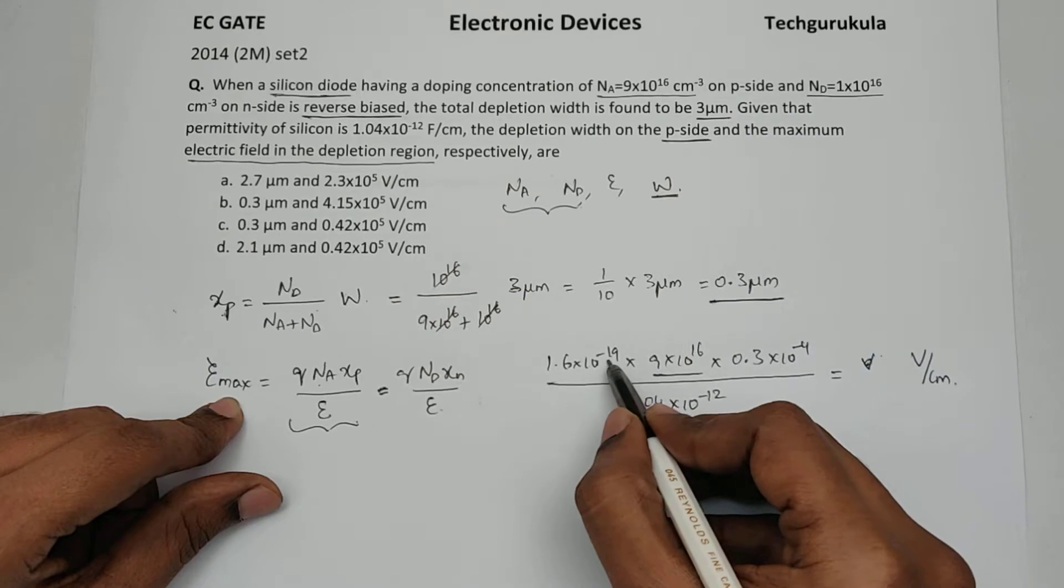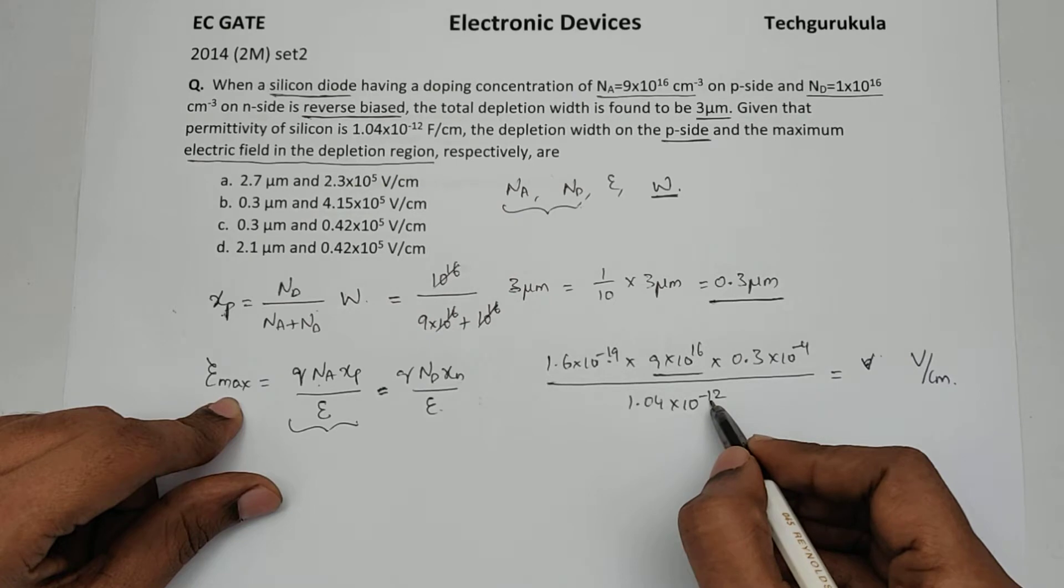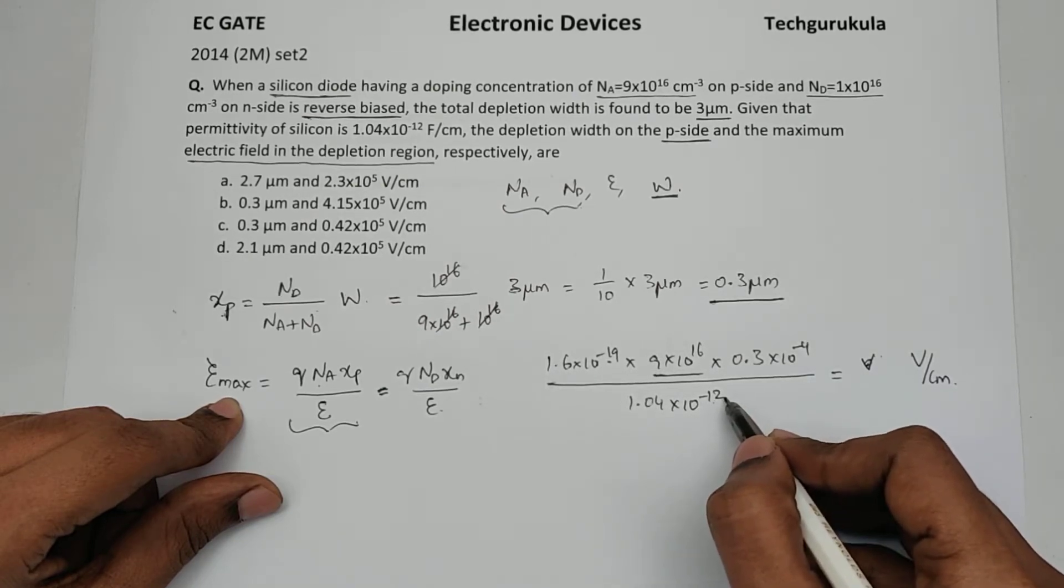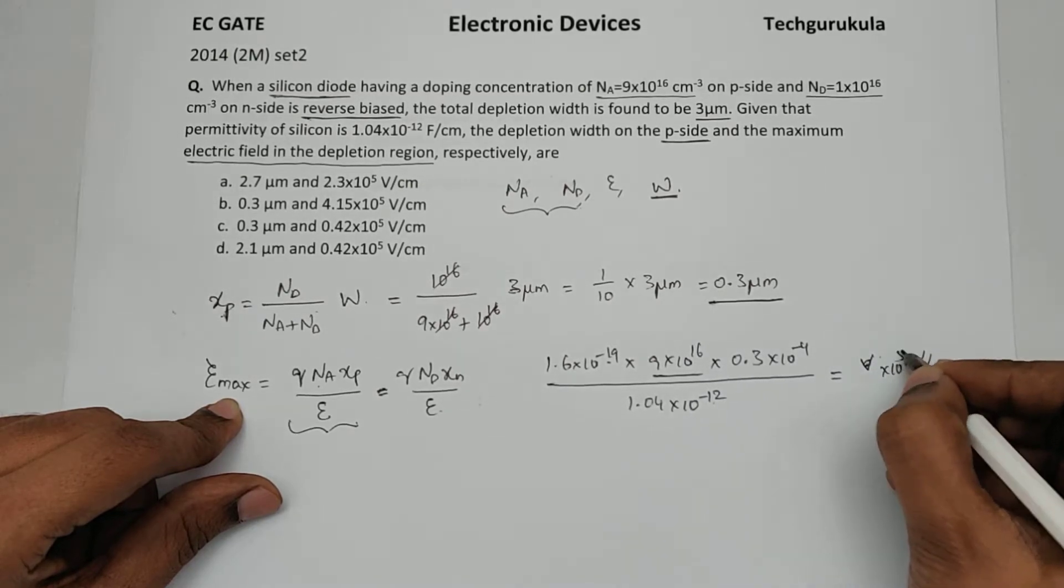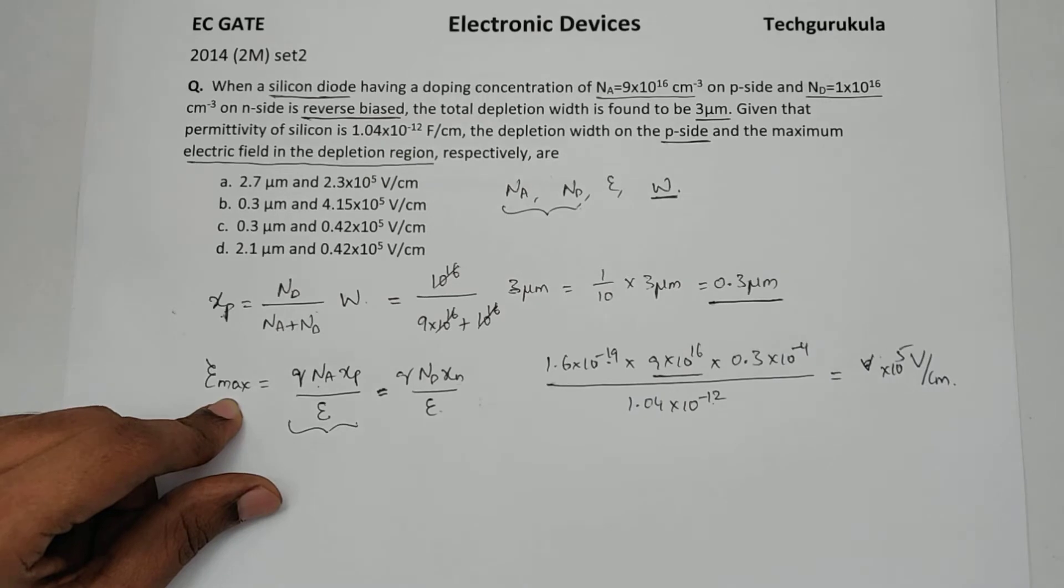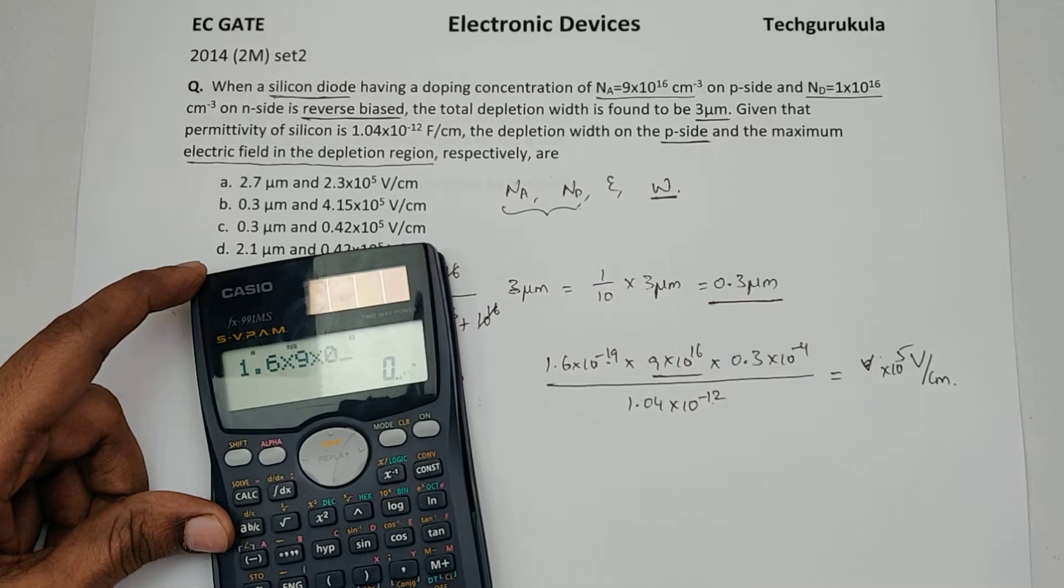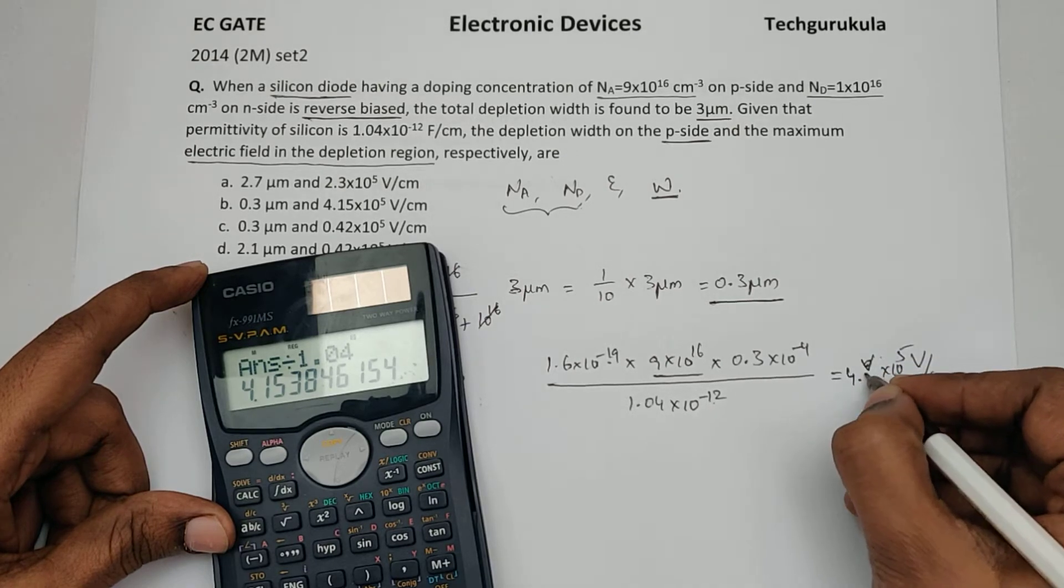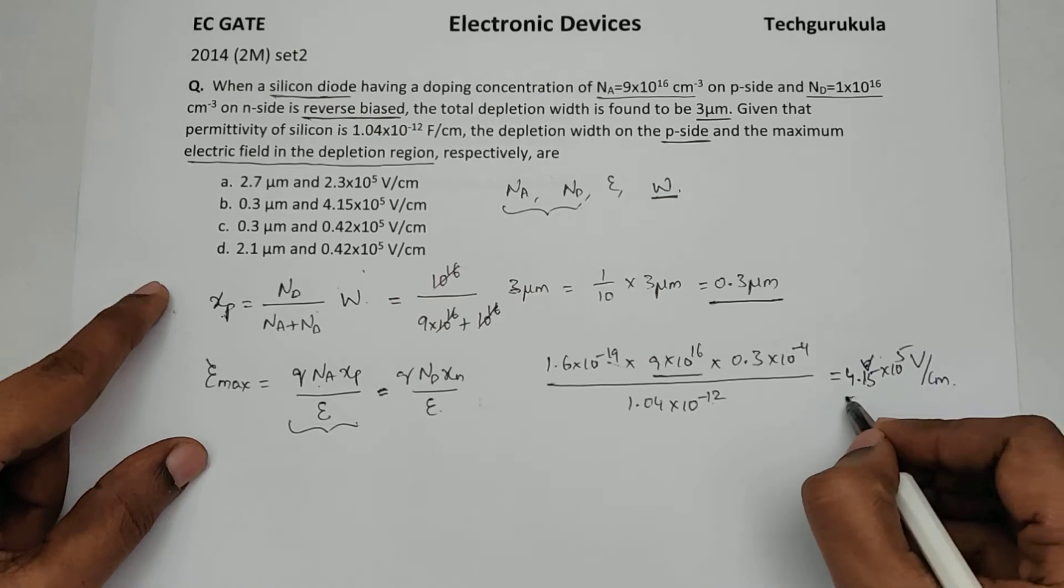Before that, minus 19 plus 16 is minus 3, minus 3, minus 4, minus 7. And minus 7 on top, minus 12 on bottom, you get in bottom minus 5. So top it becomes 10 power 5. Now let us find the magnitude here. 1.6 times 9 times 0.3 divided by 1.04. So 4.15 times 10 power 5 volt per centimeter. This is the electric field max.